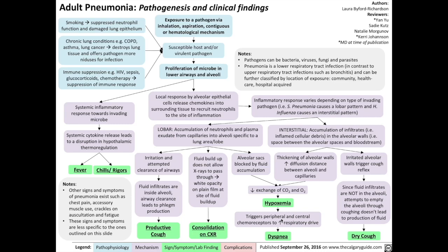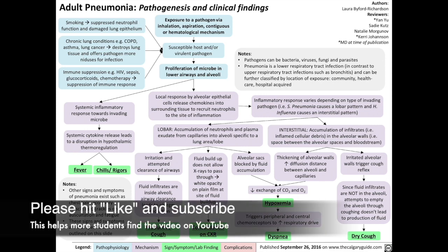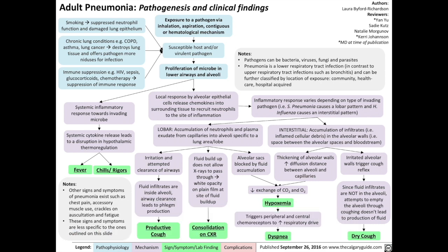Hello everybody, it's Dr. Yan Yu here, founder of the Calgary Guide to Understanding Disease. Today we're going to be talking about adult pneumonia, its pathogenesis, and clinical findings. Before we begin, you can help support us in our work by liking the video and subscribing to my channel. With that, let's get started.